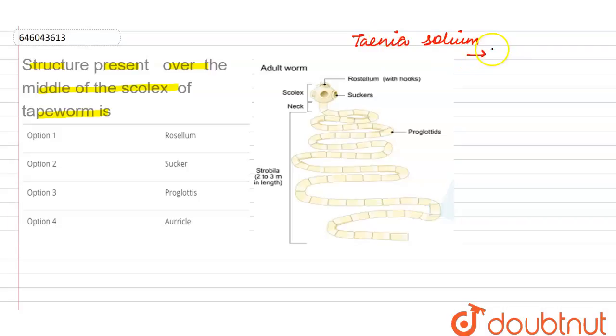So Taenia solium is going to cause the disease taeniasis and when we talk about the structure of the Taenia solium which we have here, it is divided into three parts. One is the scolex, that is the anterior head-like structure but it is not the head actually.